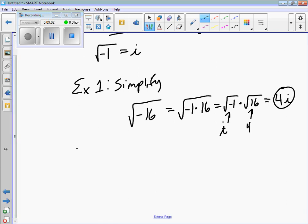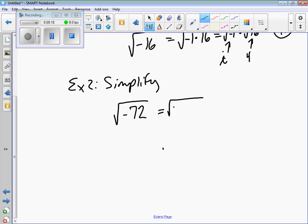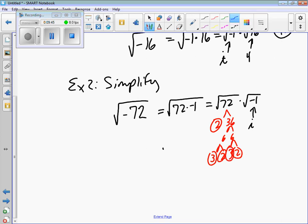Example 2: simplify the square root of negative 72. So here, we have the square root of 72 and the square root of negative 1. Break this up. Square root of negative 1, that's i. Then we have the square root of 72, and we did this earlier this year. I'm going to use trees. Circle your prime numbers: 3 times 2, 3 times 2. It's the square root, so we're looking for pairs. I have a pair of 3s and a pair of 2s. So this is going to be 3 times 2 is 6i square root, and there's a 2 left over here. So 6i√2.